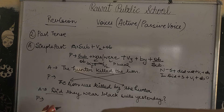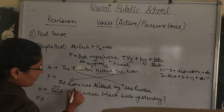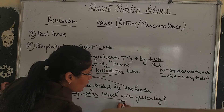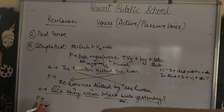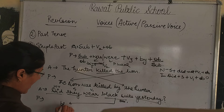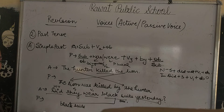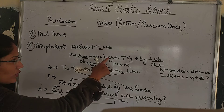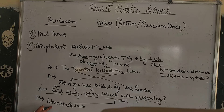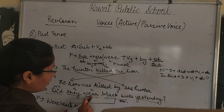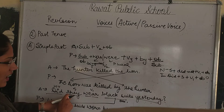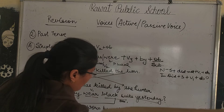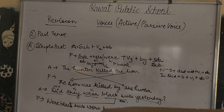To change this active interrogative to passive, first identify the subject, the verb form, and the object. 'Black suits' is the object, which becomes the subject in passive. Black suits is plural, so we use 'were'. Then verb third form: 'worn', then 'by them' — since 'they' changes to 'them'. Result: 'Were black suits worn by them yesterday?'